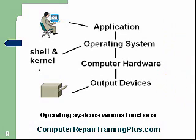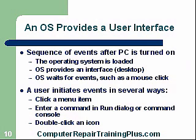An OS provides a user interface — a very important part of the OS. We have to be able to operate the software, and that's our user interface. It could be a command line or it could be graphical. After the PC is turned on, the operating system is loaded and provides the interface to our desktop. The OS waits for the user to provide some kind of input, which creates an event — could be a mouse click or the keyboard. Users initiate events via mouse, menu selection, entering a command at the run dialog or command prompt, or double-clicking an icon.